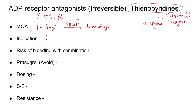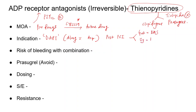Indications: they are used as dual antiplatelet agents along with aspirin. Post-PCI, they are used for at least four weeks for bare metal stents and at least one year for drug-eluting stents. When using aspirin plus clopidogrel, the risk of bleed is around two percent per year — marginally increased from aspirin alone at one to three percent.